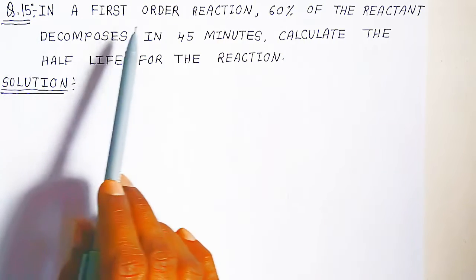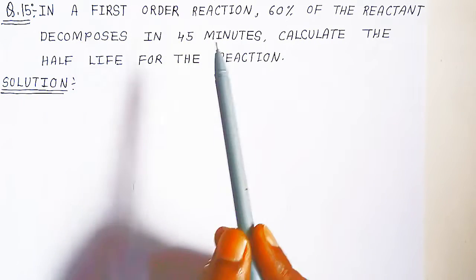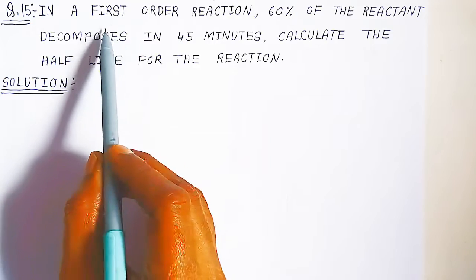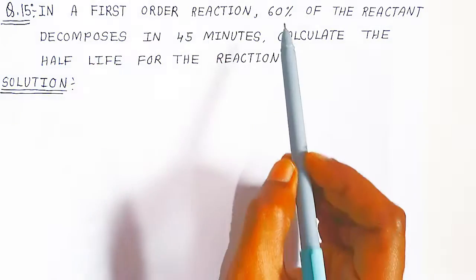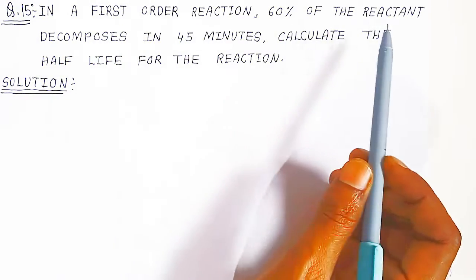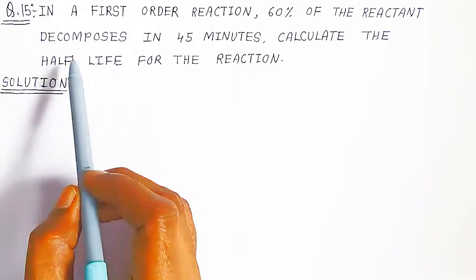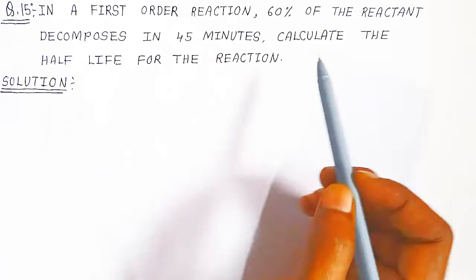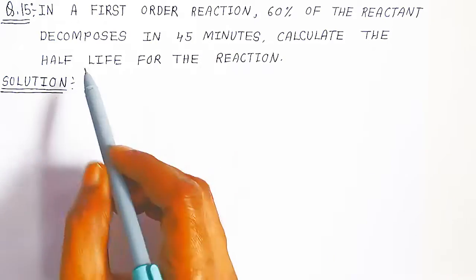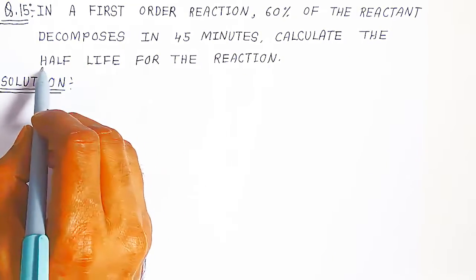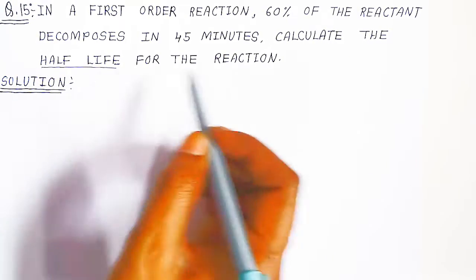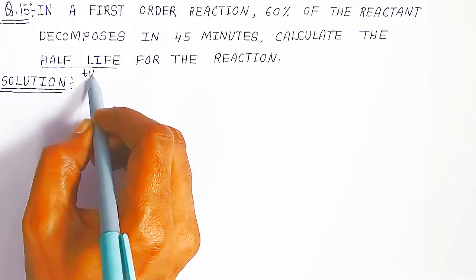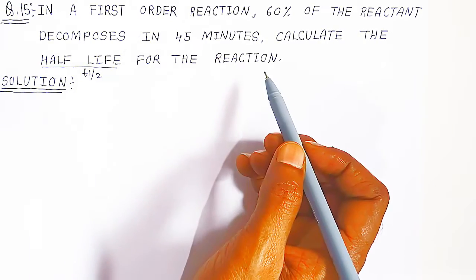In a first order reaction, 60% of the reactant decomposes in 45 minutes. Calculate the half life of the reaction — that is, you have to calculate T half of the reaction.